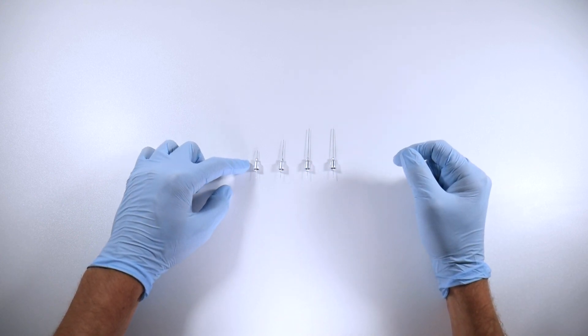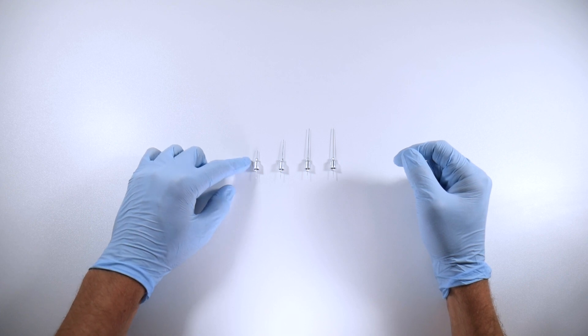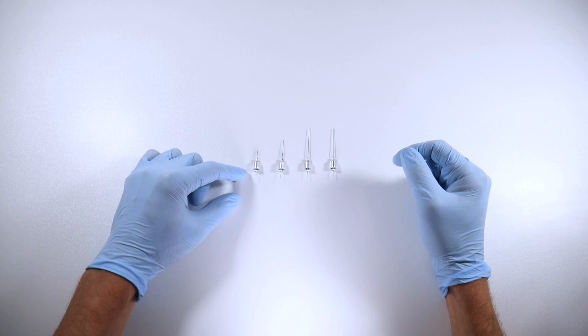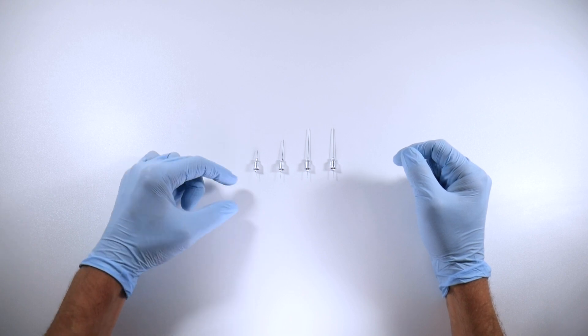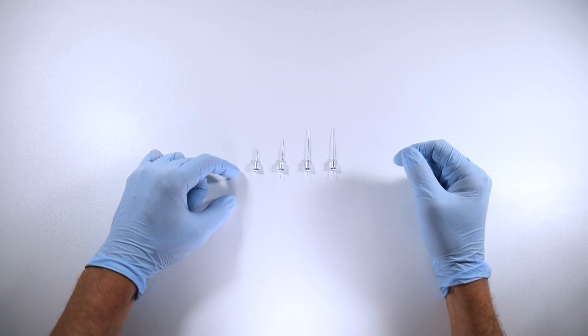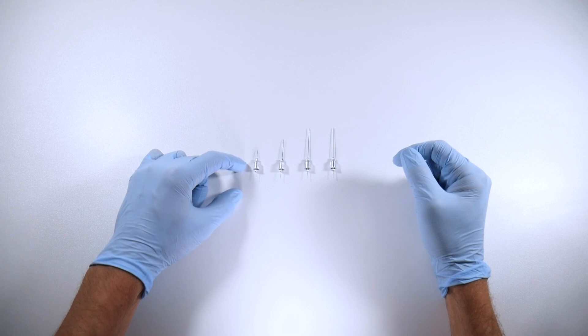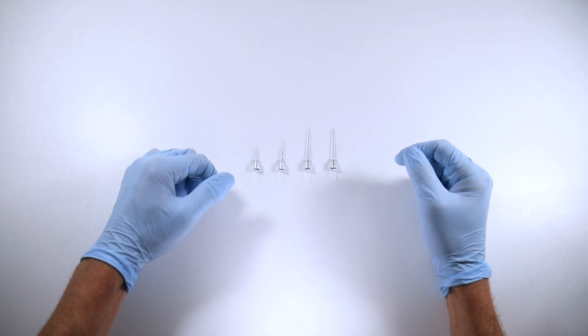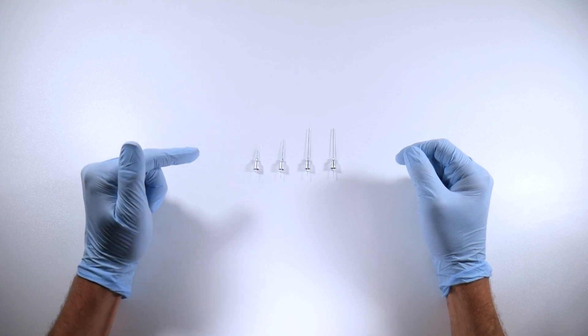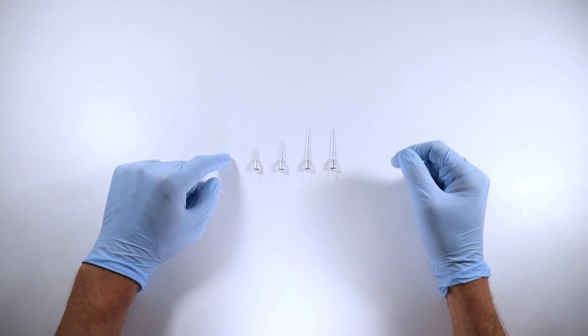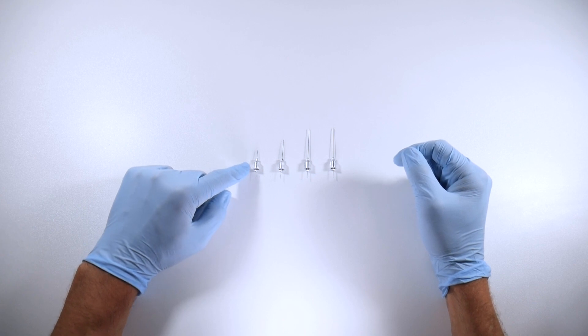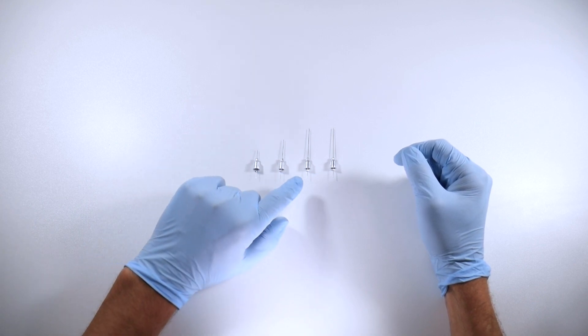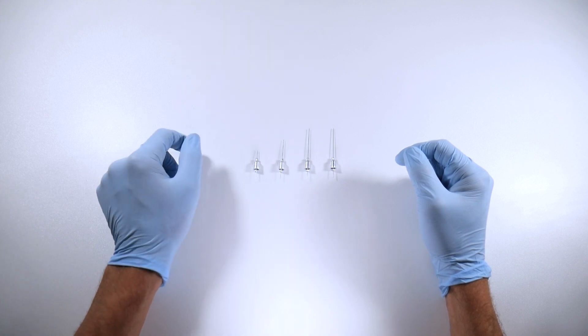So here we are, we've got our needles here, all different lengths. Starting with the extra short needle - this is a great one for a couple different injections. One is the PDL injection. When you're doing a PDL injection, you're going to be applying a ton of pressure, lots and lots of pressure. In order to keep the needle seated properly and get the pressure that's necessary to get that solution to go down into the bone, you need to have a shorter needle.